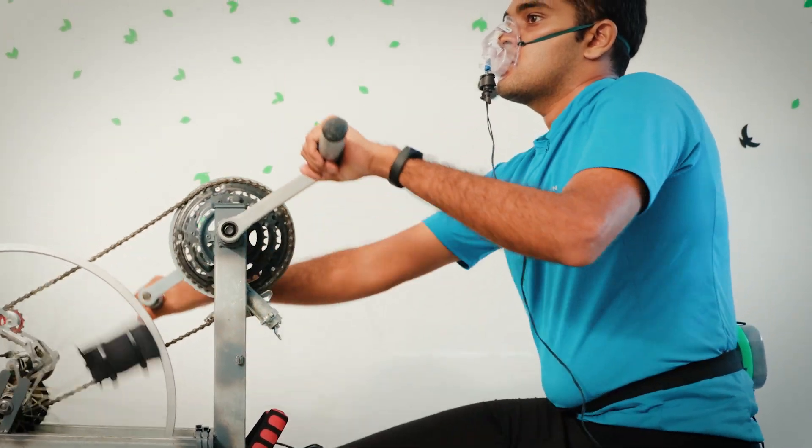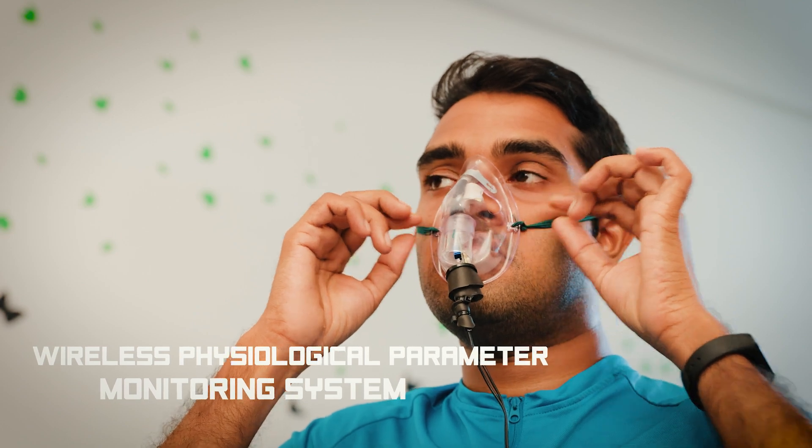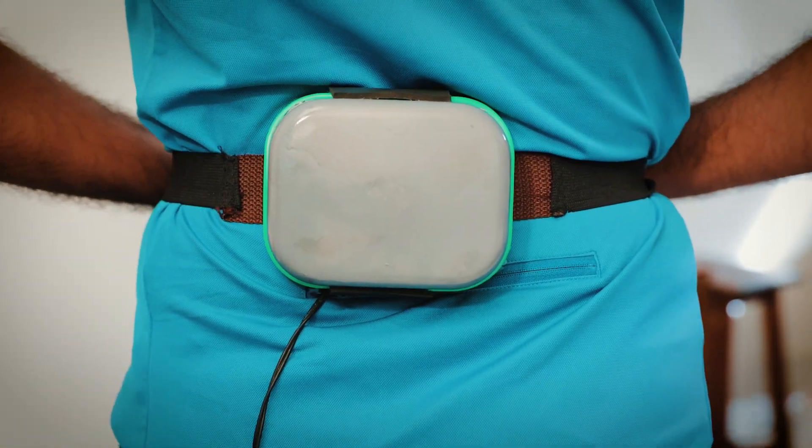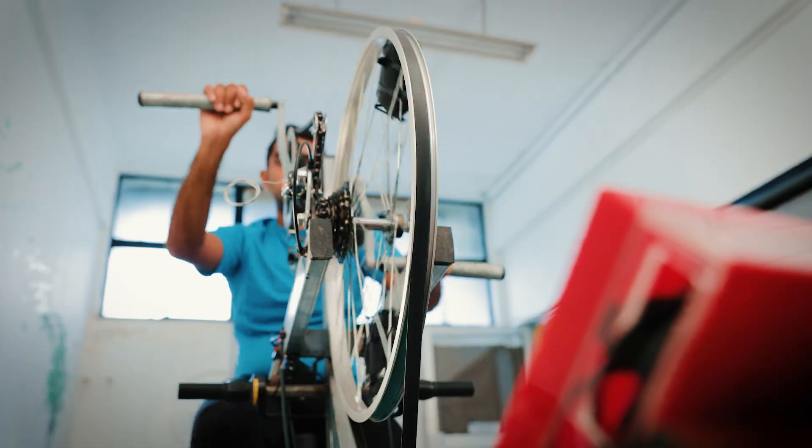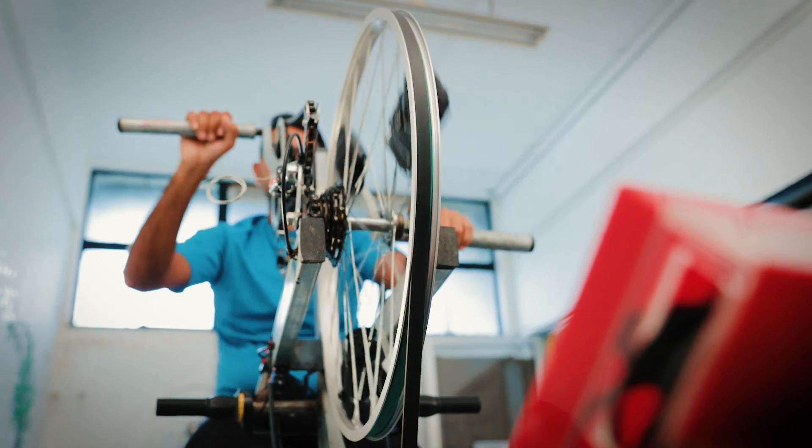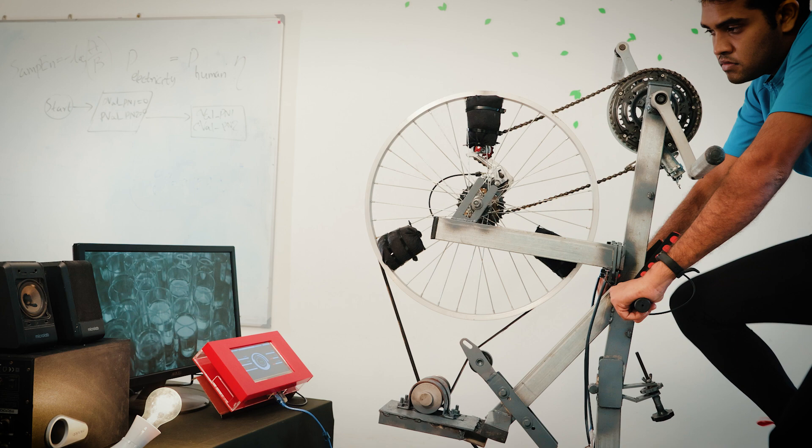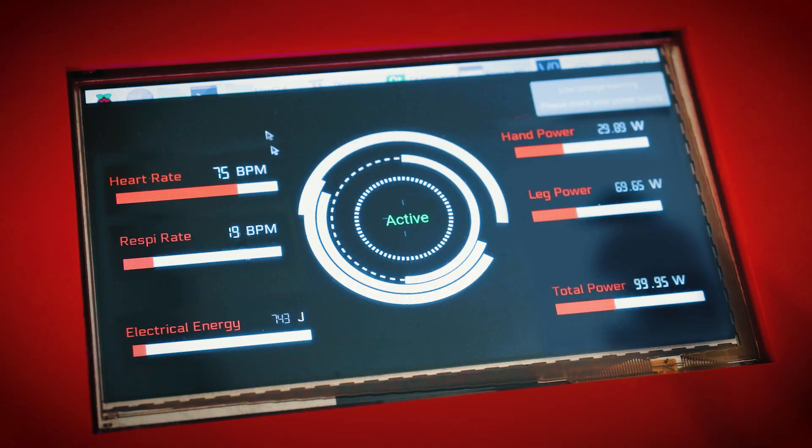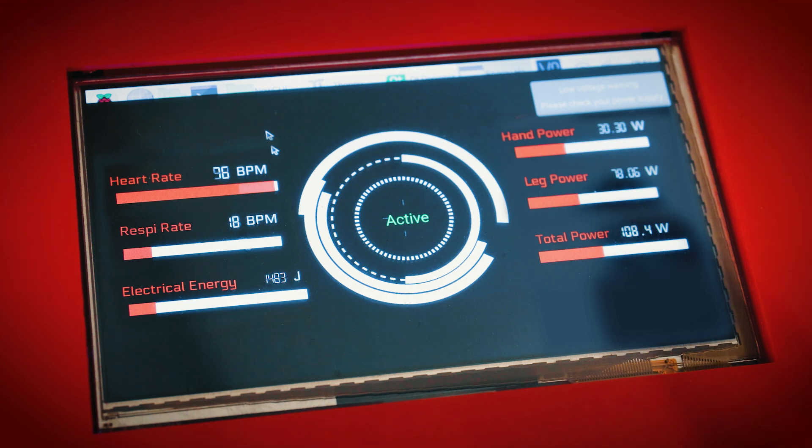As an additional feature to identify fatigue, it includes a chest strap and a respiratory sensing mask to capture the physiological parameters of the user. The energy harvester comes with a graphical user interface which enables users to monitor their heart rate and respiratory rate during workouts. This feature also enables users to identify the hand power, leg power, total power, and the total generated electrical energy output.